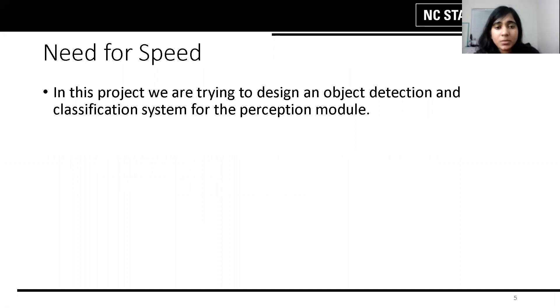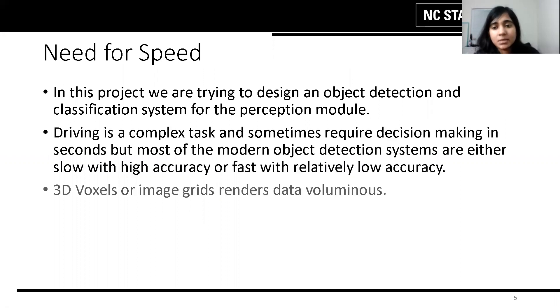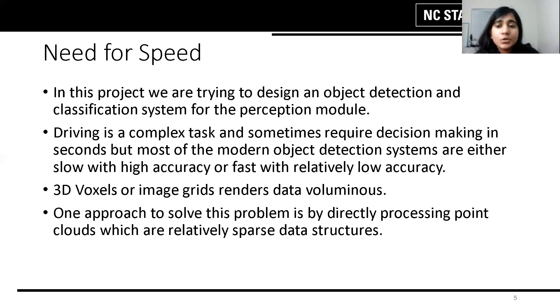Driving requires quick and precise decision making but most modern object detection architectures are either slow with high accuracy or fast with relatively low accuracy. This is because most researchers use data in the form of 3D boxes or image grids which renders data unnecessarily voluminous. A solution to this is the direct usage of point clouds which are relatively sparse data structures.